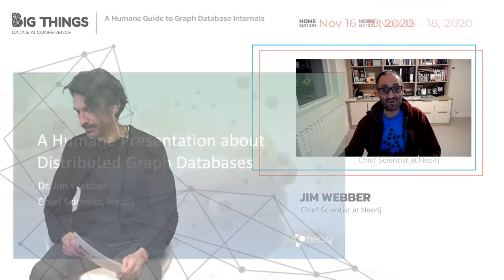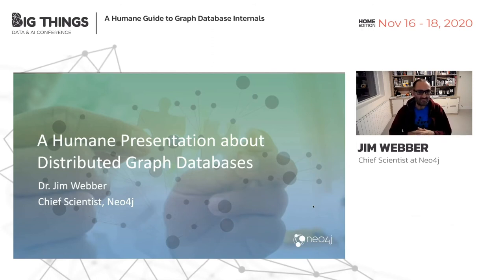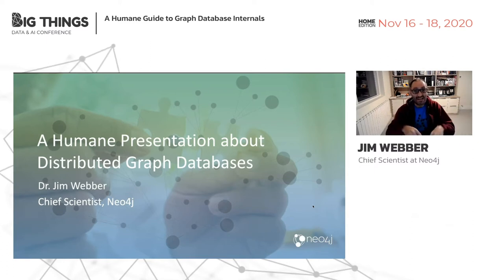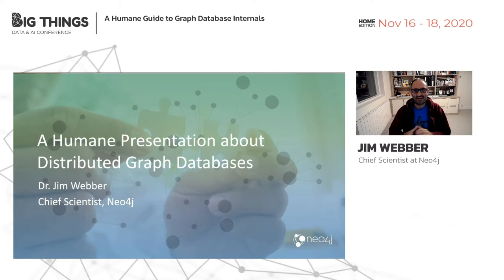Hello, everyone. My name is Jim Weber. I'm Neo4j's Chief Scientist. A few minutes ago, you just saw the marketing-level view of Neo4j and what it means to be a graph database. In this talk, I'm going to take you right down into the weeds. We're going to talk about some computer science stuff and the future of distributed graph databases.